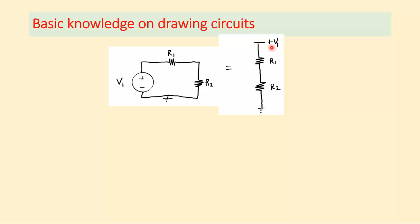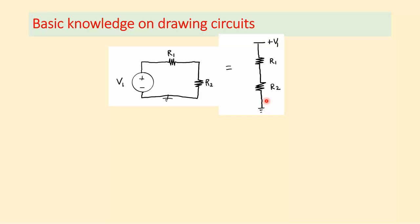If you have V1 connected to R1 in series with R2 going to ground, this V1 simply means this node is connected to a voltage of value V1 with the other end connected to ground. These two drawing styles are the same. If you are not comfortable with the shorthand layout, you can always convert it to the complete loop drawing before doing KVL and KCL.